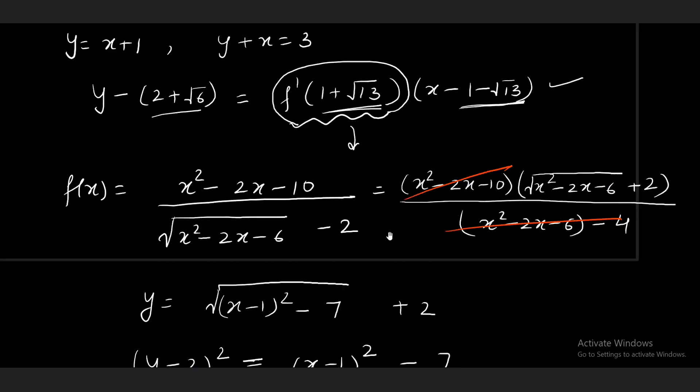So, 2 plus root 6 is a point on the curve. Yes. So, see we have a point on the curve and slope of the tangent. So, it is nothing but, this third line is nothing but a tangent line to the hyperbola. Right?